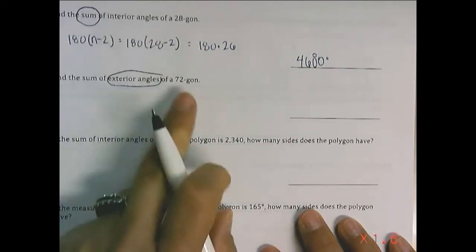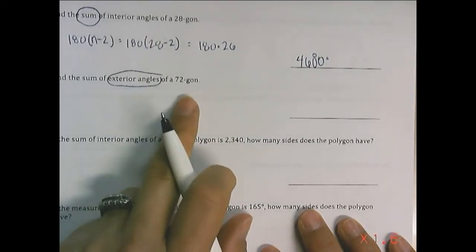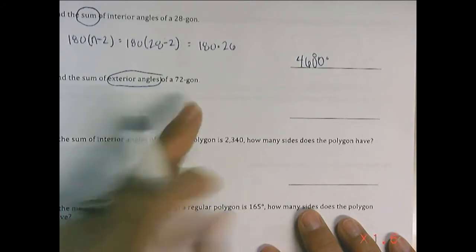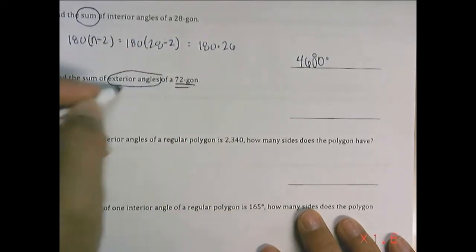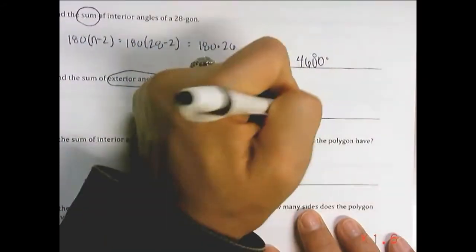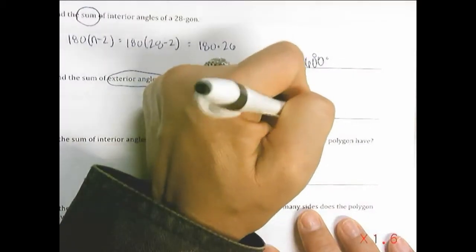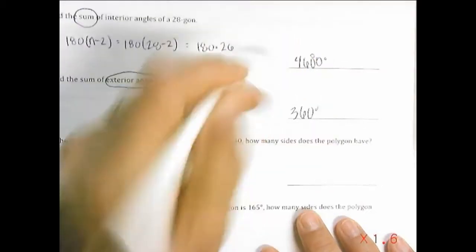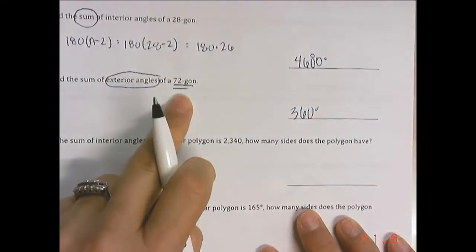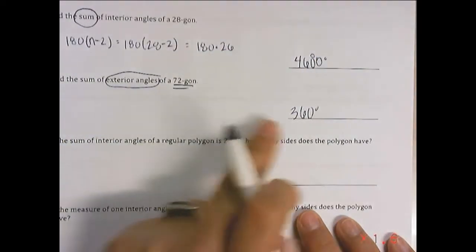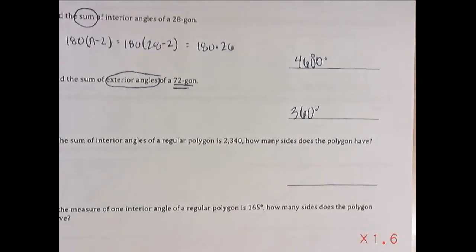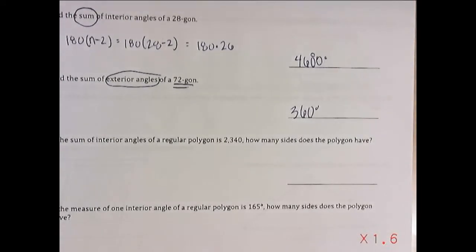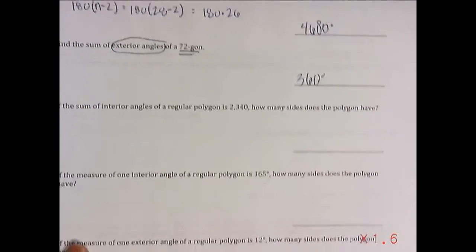Find the sum of exterior angles of a 72-gon. Exterior angles always add to 360 no matter how many sides there are, so our answer is simply 360 degrees.